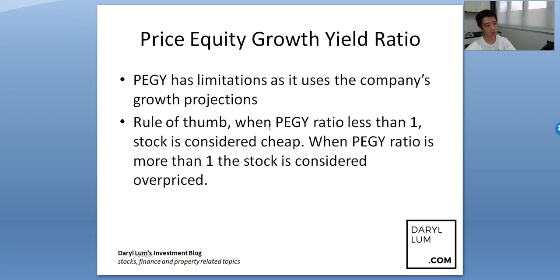The rule of thumb is: when the PEGY ratio is less than one, the stock is considered cheap; when the PEGY ratio is more than one, the stock is considered overpriced. That's all from this lesson, and I'll see you in the next video.